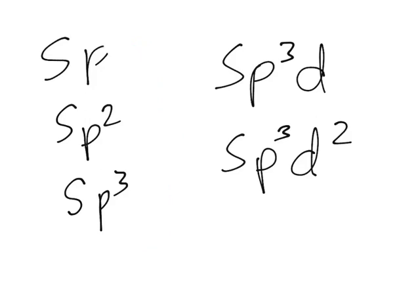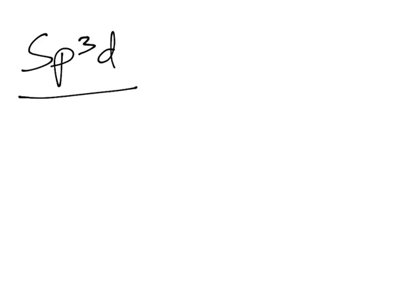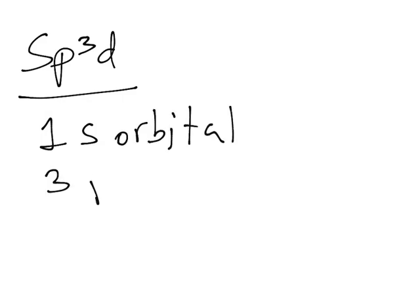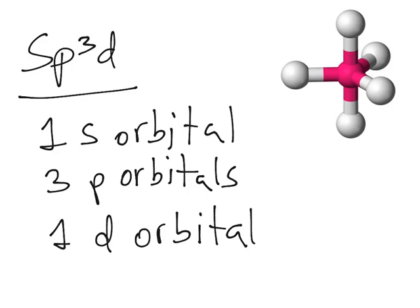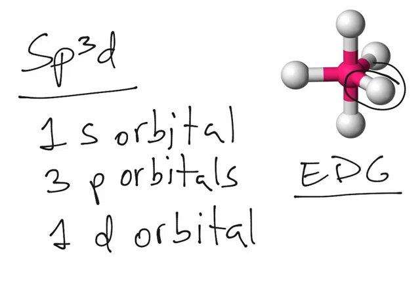Let's start with sp3d. As its name says, it has one s orbital, all three p orbitals, and one d orbital. An sp3d hybridized molecule will look something like this. So instead of the usual four tetrahedral shape, it will have one more atom coming out bonded to the central atom. The electron geometry given to this is called trigonal bipyramidal.